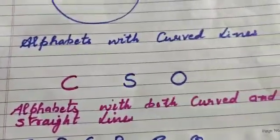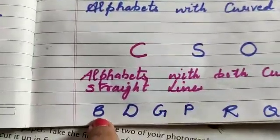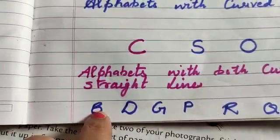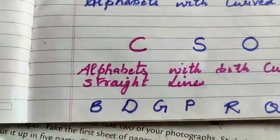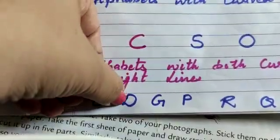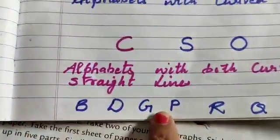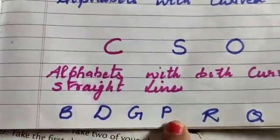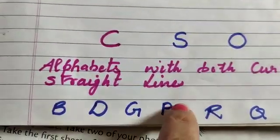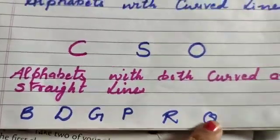Alphabets with both curved and straight lines are B for boy. See, this line is straight and these are curved lines. D — this D has a straight line and this is again a curve. G, P, R — in P, this is a straight line and this is a curved line. R, Q.